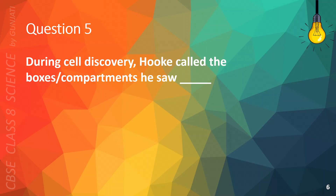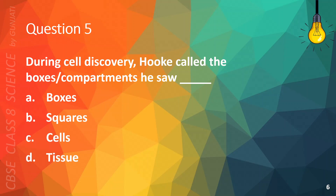Question 5. During cell discovery, Hooke called the boxes or compartments he saw blank. A. Boxes. B. Squares. C. Cells. Or D. Tissue. The correct answer is C. Cells.